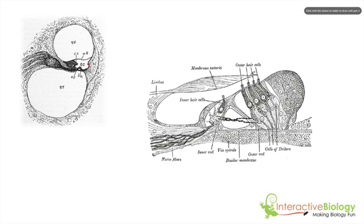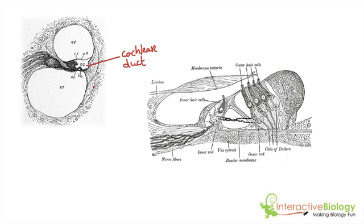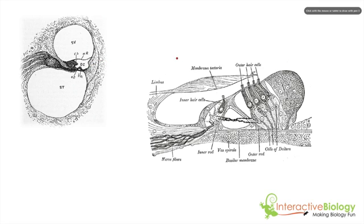One more place I want you to pay attention to: here is another cavity we call the cochlear duct. And once again, in here we have the organ of Corti. So this is a cross-section of the cochlea and that's how it's laid out. Now I want to bring your attention to the organ of Corti, which is shown clearly right here.